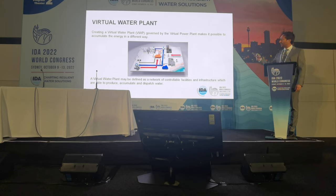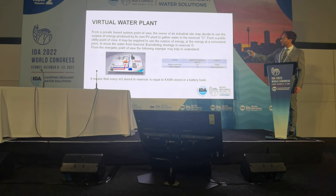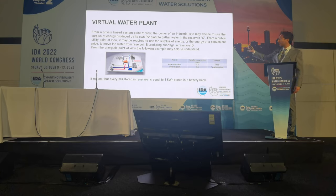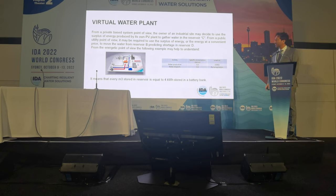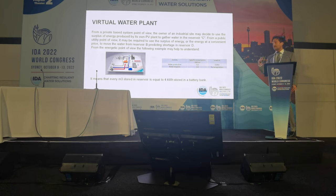The idea is to implement a virtual water plant, which distributes water the way a virtual power plant distributes energy. For example, instead of having normal storage, we can use the virtual water plant to dispatch water to point B when required — when there is a surplus of energy — or maybe the owner of an industrial site at point C is predicting a shortage of water and collects water when there is a surplus of energy from their own PV plant, or when the price of energy is lower.